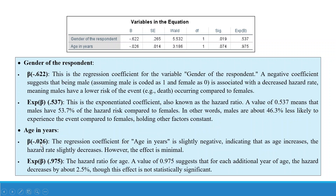For age in years, the regression coefficient is minus 0.026, slightly negative, indicating that as age increases the hazard rate slightly decreases. However, the effect is minimal and not statistically significant, as the p-value is greater than 0.05. In contrast, the p-value for gender is less than 0.05, making gender a significant predictor. The hazard ratio for age is 0.975, suggesting that for each additional year of age the hazard decreases by about 2.5 percent, though this effect is not statistically significant.